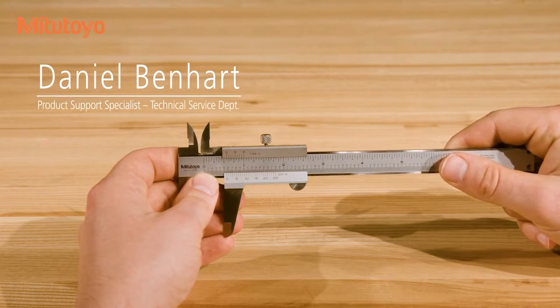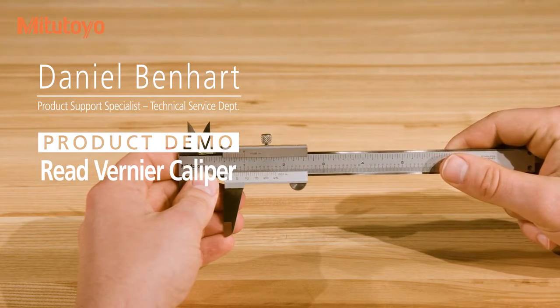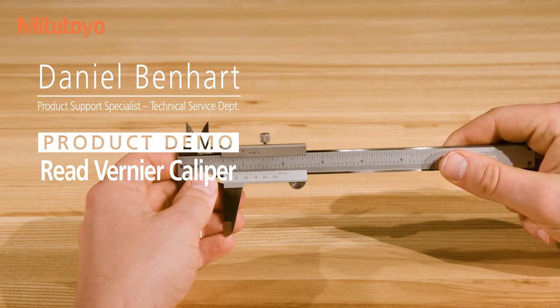Once you've measured your workpiece, you can read the caliper to determine the value of the measurement. There are two sets of graduations on a vernier caliper.